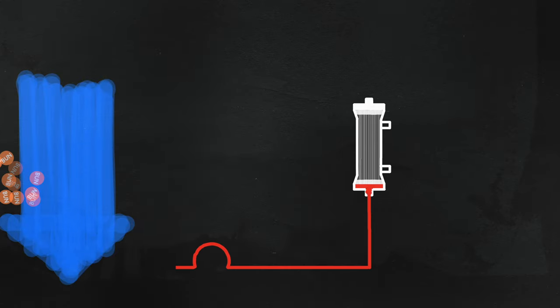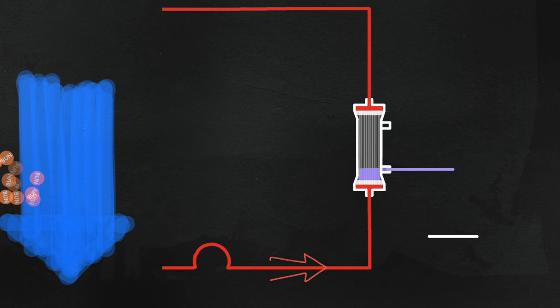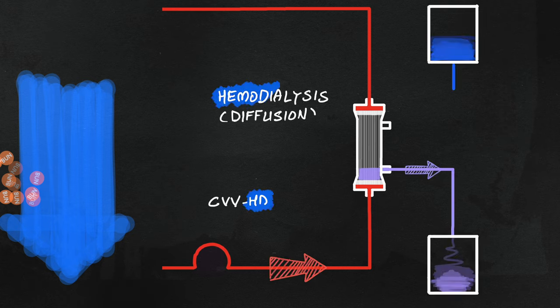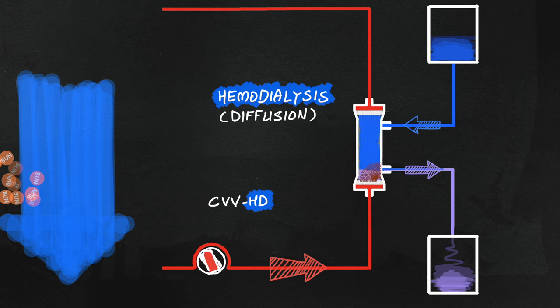Diffusion-based therapy, on the other hand, or CVVHD, involves the counter-current flow of dialysate within the filter, and does not involve the use of replacement fluids, which is the mode of therapy in typical intermittent hemodialysis.